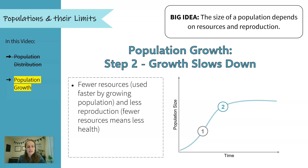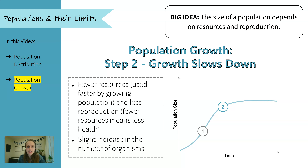Over time, the resources start to get used up — that fast-growing population starts to eat all the food or take up all the space. This means there's less reproduction because some organisms might be less healthy since they don't have as much food or space. So growth slows down; we see a slight increase in the number of organisms still, but not that steady steep curve from the beginning.